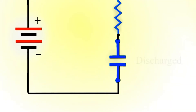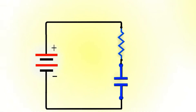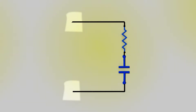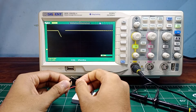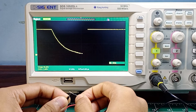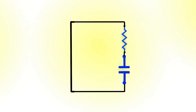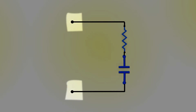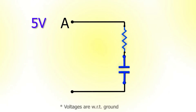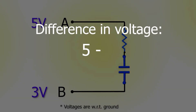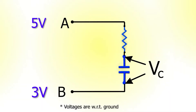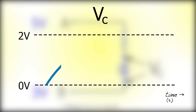The capacitor can also be discharged by using the same resistor — just connect the resistor in parallel by shorting these two points, and the voltage across the capacitor decreases slowly. One more thing to know: a capacitor will charge up to the difference in voltage supplied between two points. For example, if point A is at 5V and point B is at 3V, the capacitor will charge up to the difference, which is 5 minus 3, equal to 2V. So voltage across the capacitor will increase from 0V up to 2V over time.